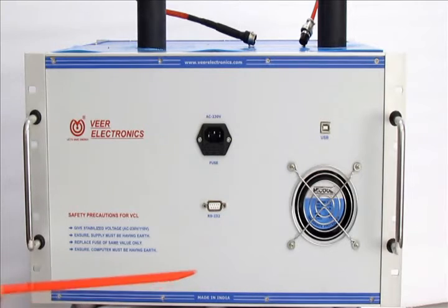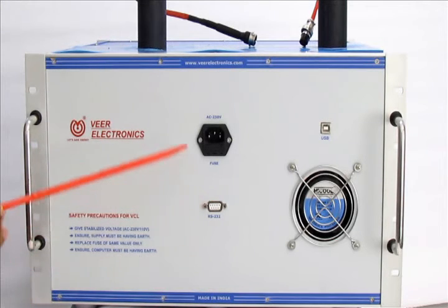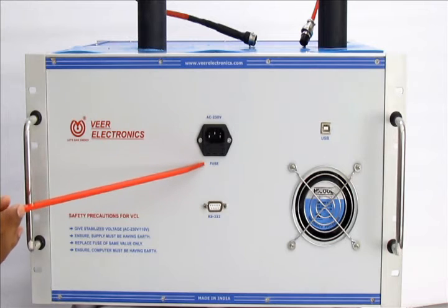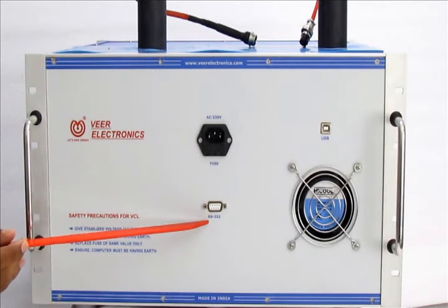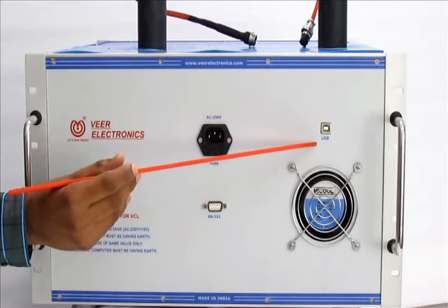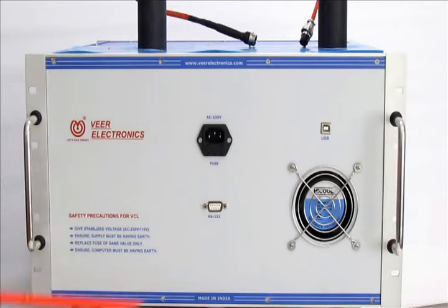This is the back panel of VCL. It is the mains power supply socket with combined fuse housing socket. These are RS-232 and USB sockets. Both are useful to communicate with computer software.